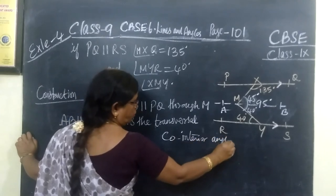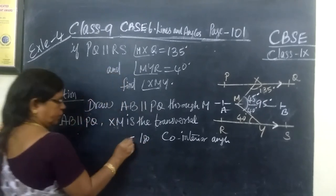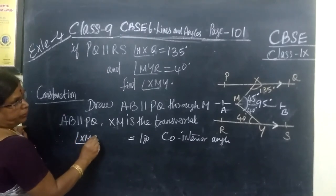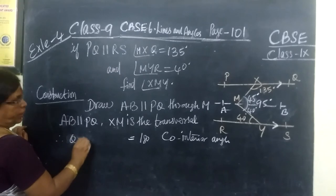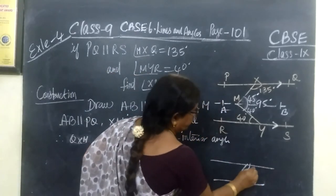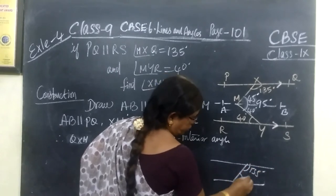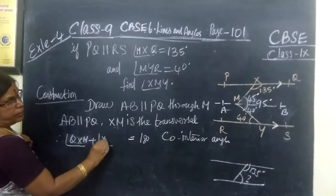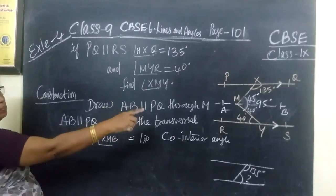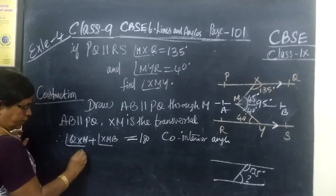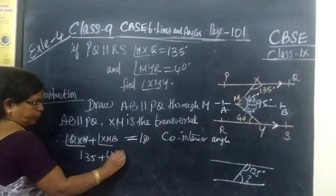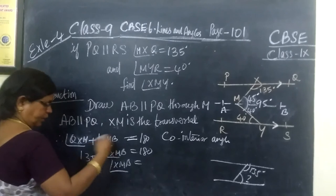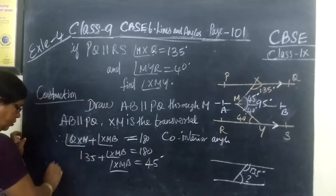Co-interior angles: the sum of the angles should be equal to 180 degrees. That is, angle QXM in this way. Here this is 135. So what is this angle? So QXM plus angle XMB equal to 180 degrees. This is 135 plus XMB equal to 180, so XMB equal to 180 minus 135 equal to 45.